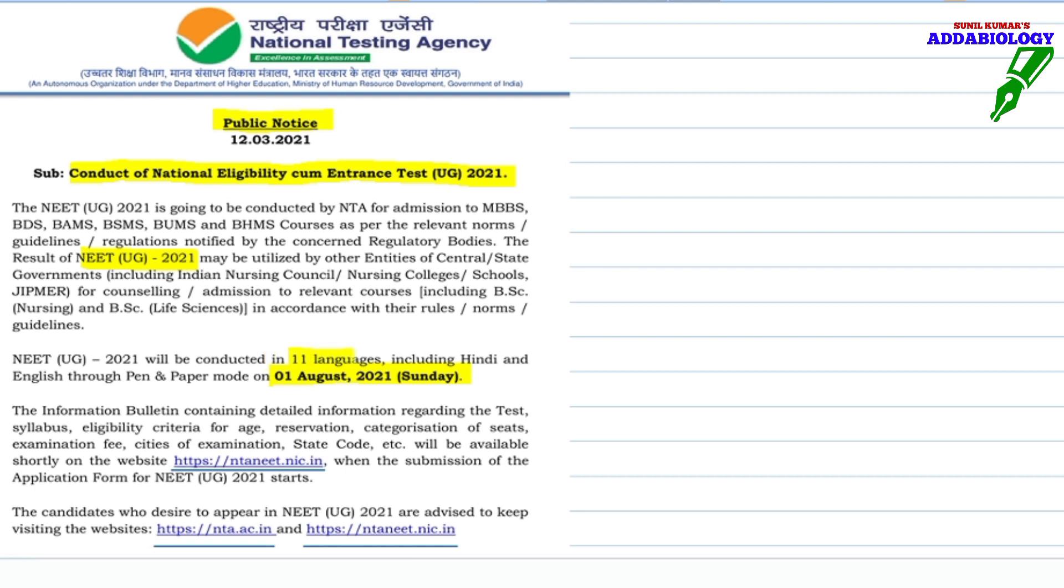NEET 2021 will be on 1st August, Sunday. Paper will be released in 11 different languages including Hindi and English. If you want to see this public notice, visit the NTA site - ntaneet.nic.in. Pen and paper method, 11 languages. 1st August 2021 is your date. Don't forget the date.